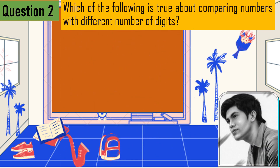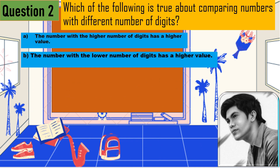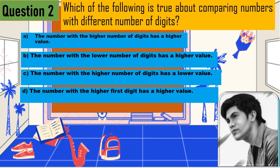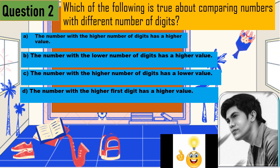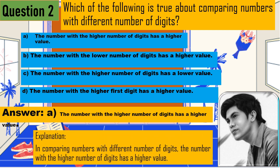Question 2: Which of the following is true about comparing numbers with different numbers of digits? A — the number with the higher number of digits has a higher value; B — the number with the lower number of digits has a higher value; C — the number with a higher number of digits has a lower value; D — the number with the higher first digit has a higher value. The correct answer is letter A: the number with the higher number of digits has a higher value.